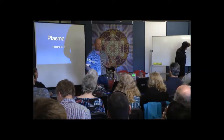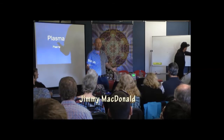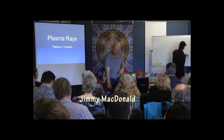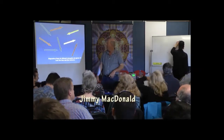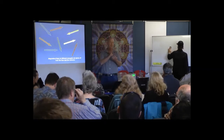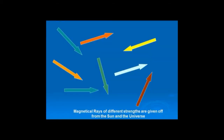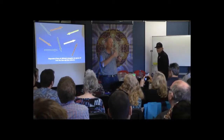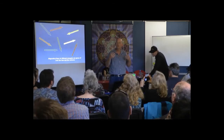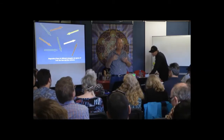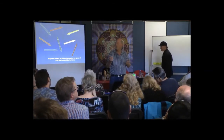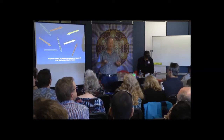So, plasma rays — those are the things that are coming in all the time. You have plasma from the sun, and when these plasmas are in motion, we have magnetic rays of different strengths, all coming from the sun and the universe. Not every ray is the same — billions and billions with all different magnetic strengths. They are all magnetic rays.